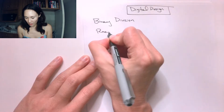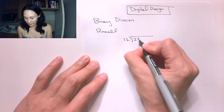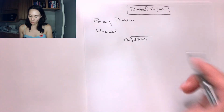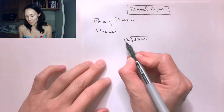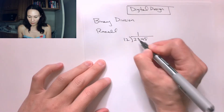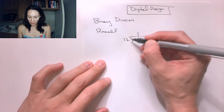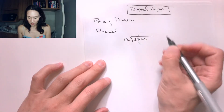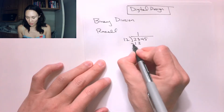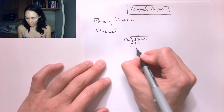Recall, if you wanted to do 12 into 2345, what was the algorithm? Well, the first thing we did is we asked ourselves how many times does 12 go into 23. The answer is 1, so we put a 1 above the 3. Then we multiply the 1 by 2 and put it under the 3. Multiply the 1 by 1 and put it under the 2. We change the sign and add straight down to get 11.